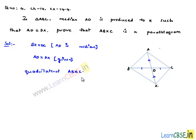So in the quadrilateral ABXC, diagonals AX and BC bisect each other, since BD is equal to DC and AD is equal to DX.